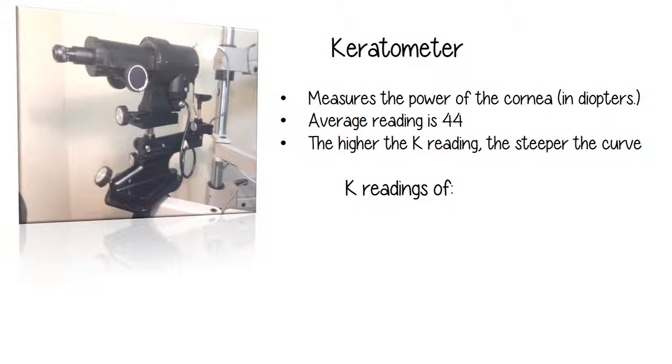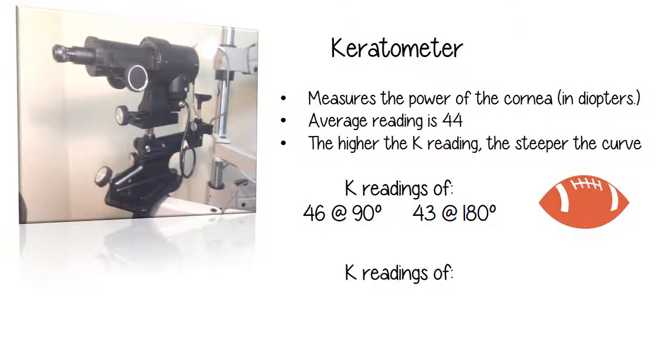So k readings of something like, let's say we have 46 at 90, 43 at 180. 90 is going to be steeper. The 43 at 180 is going to be our flatter curve. So you're going to have an eye that shapes something like a football in the passing position, also known as with the rule astigmatism.